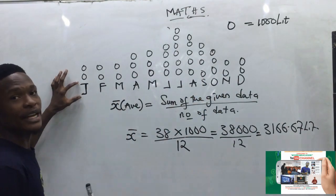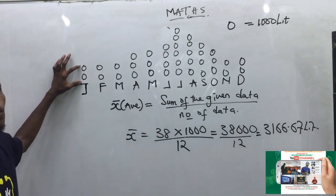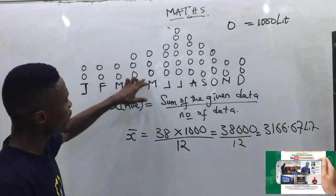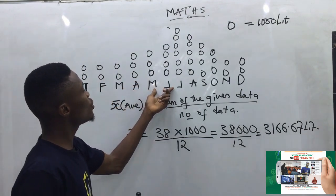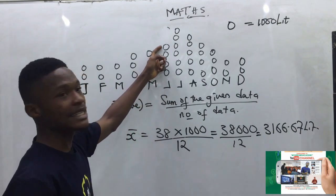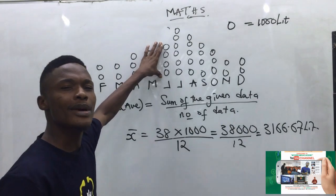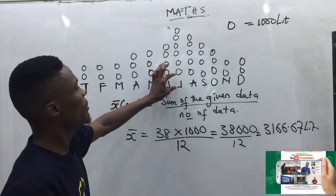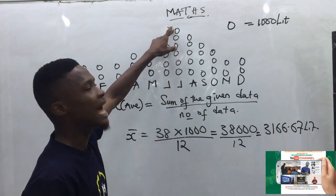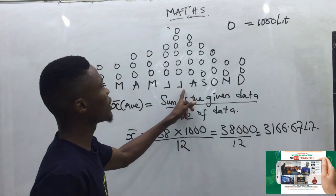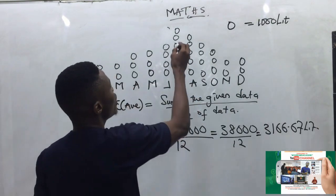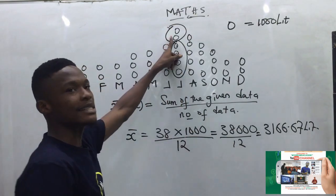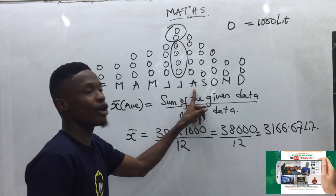In January, the family used only 2,000 liters — not charged. February, March, April, and May were also under the limit — not charged. In June they used exactly 4,000 liters — since the rule is more than 4,000 liters, they are not charged. But in July they used 6,000 liters: they are not charged for the first 4,000, only for the excess of 2,000 liters.